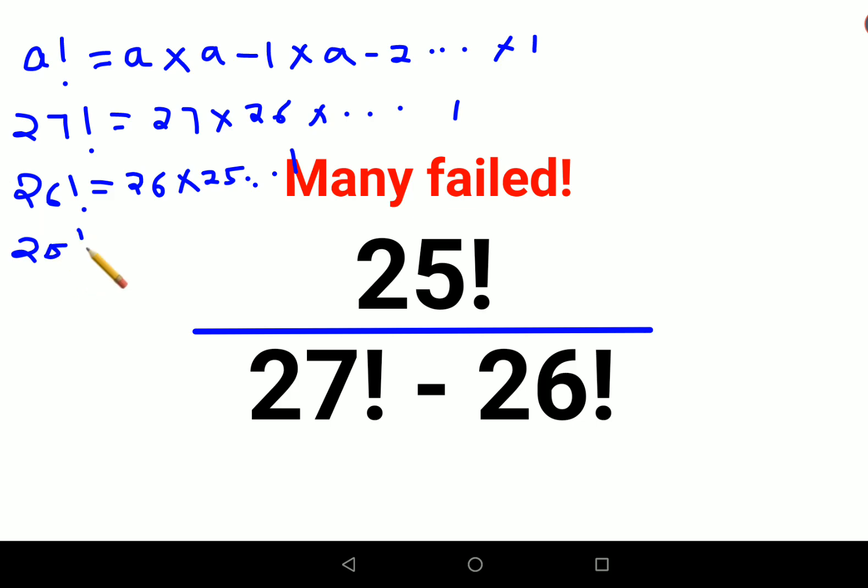25 factorial can be written as 25 × 24 × going on up to 1. From this, I can say that 27 factorial can be written as 27 × 26 factorial.